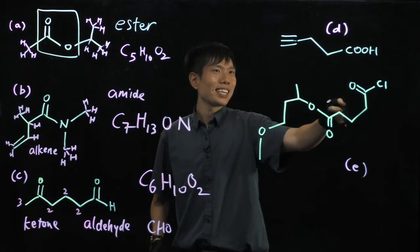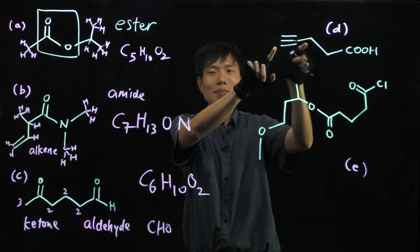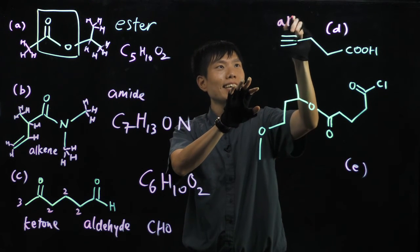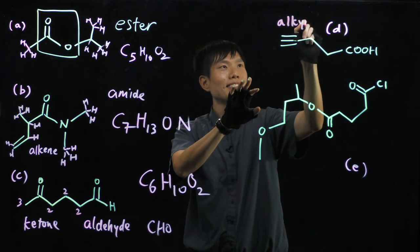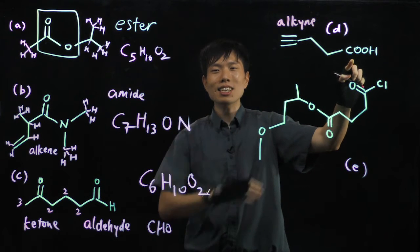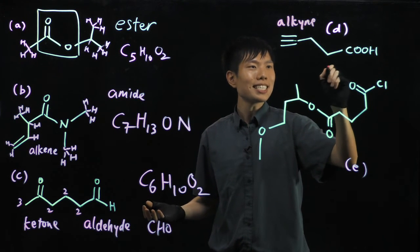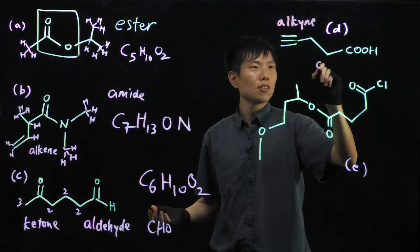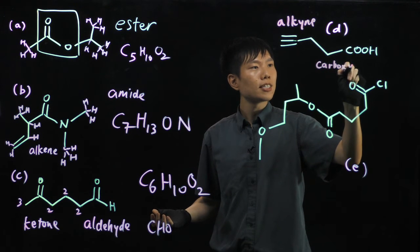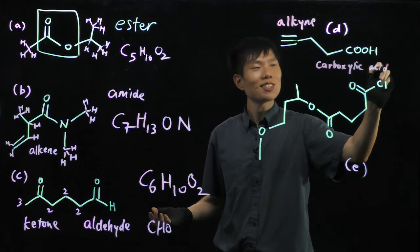Next molecule — molecule D. I see a triple bond: carbon-carbon triple bond. That is an alkyne. And at the end, COOH — a carboxylic acid. So: alkyne and carboxylic acid. That's simple.